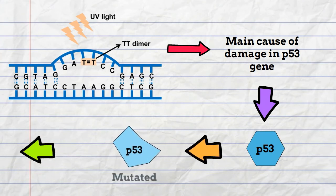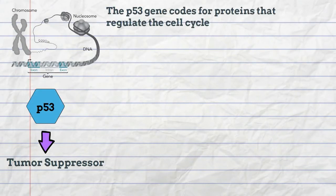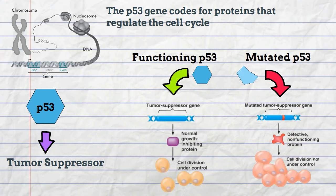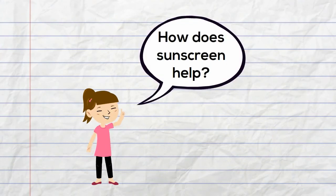The formation of dimers is the main cause of UV-induced damage in the p53 gene, a gene found to be mutated in the majority of human cancers. This gene functions as a tumor suppressor and codes for a protein that regulates the cell cycle, protecting the cell from damage. Exposure to solar UV radiation mutates the gene, making the individual more susceptible to skin cancer. So if UV radiation causes cancer, how does sunscreen help?